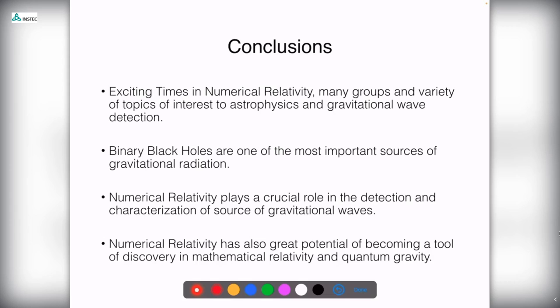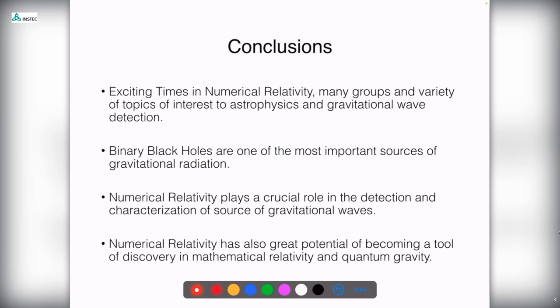Conclusions: these are very exciting times for numerical relativity. Many groups are interested in astrophysics, gravitational wave detection, and mathematical relativity. The binary black hole problem in its simplest form — comparable masses, not too high spins — is essentially done, but there are many other things to explore. The main driver will continue to be that binary black holes are one of the most important sources of gravitational radiation, and numerical relativity will continue to play a crucial role in detection and in characterizing sources — reading the parameters of the astrophysical system from the waveform. Numerical relativity also has great potential as a tool for exploring mathematical relativity and quantum gravity. LIGO is currently undergoing an upgrade and will be turned on again at the end of the year or early next year.